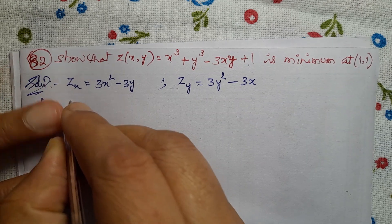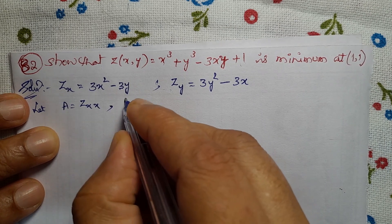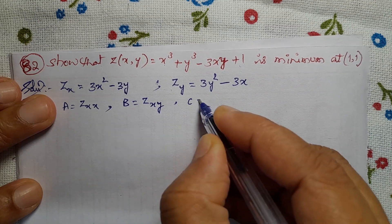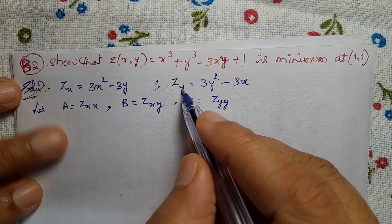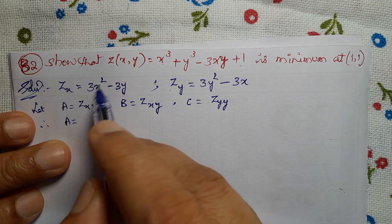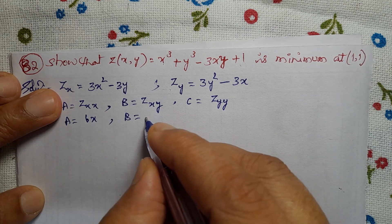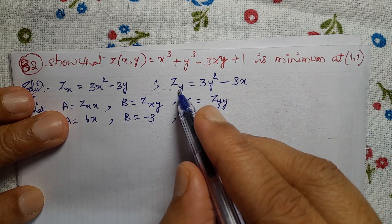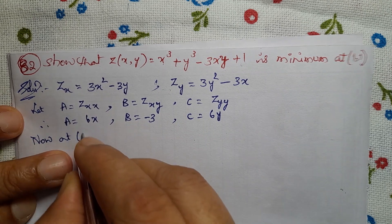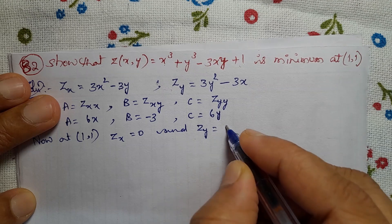Let A equal to ZXX — partial differentiation of ZX with respect to x. B equal to ZXY — partial differentiation of ZX with respect to y. C equal to ZYY — partial differentiation of ZY with respect to y. Therefore, A equals 6x, B equals -3, and C equals 6y.